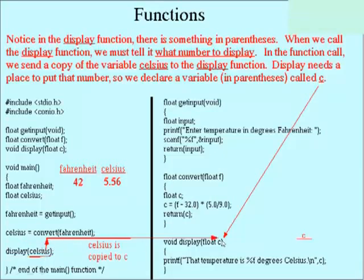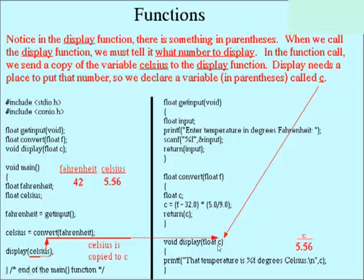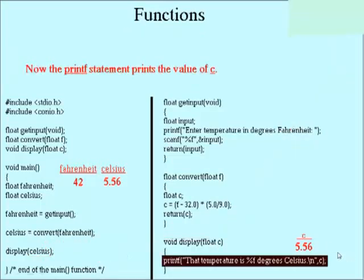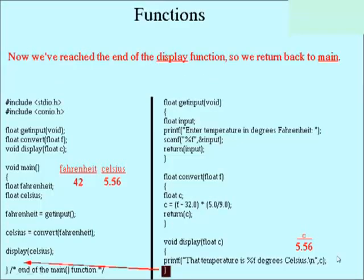It takes Celsius, copies it to this local variable in display called c. So c gets a value of 5.56. It prints that value on the screen. So 5.56 will appear on the screen. And then it returns back to main. Notice I didn't need a return statement. When you get to the ending curly brace, it says that's the end of this function.